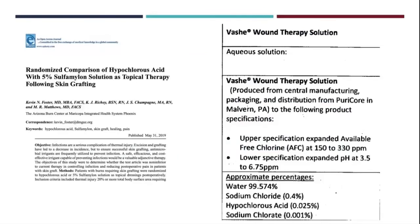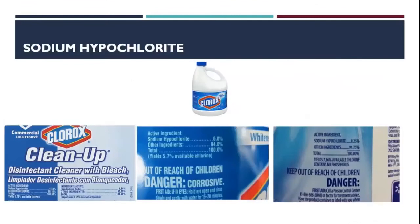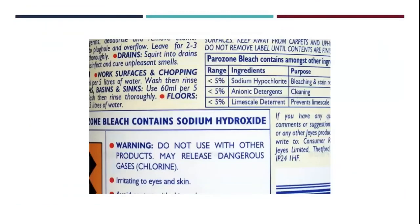There are still very dilute sodium hypochlorite solutions used topically, such as the Vashe wound therapy solution, but the concentration is very, very low. The typical household bleach solution varies from 3% to 8% and should never be ingested. Some bleach preparations contain lime scale detergent which may include sodium hydroxide, and may also release dangerous gases such as chlorine.